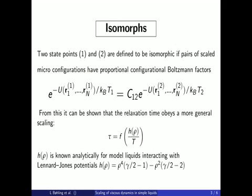In order to explain this we use a new concept from 2009 in statistical mechanics called isomorphs. Two state points are defined to be isomorphic if pairs of scaled microconfigurations have proportional configurational Boltzmann factors.